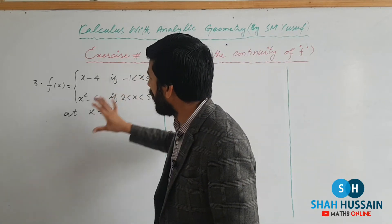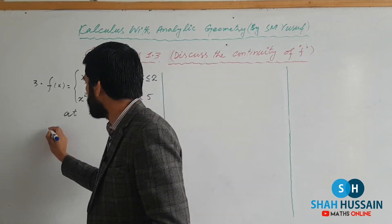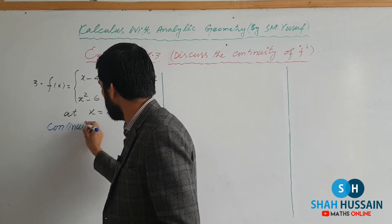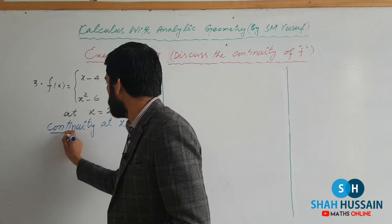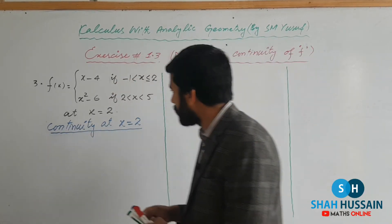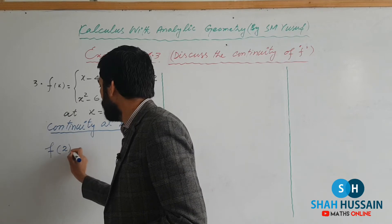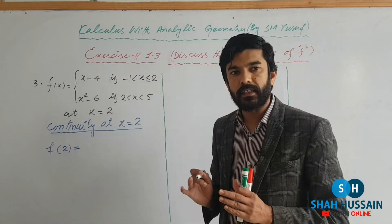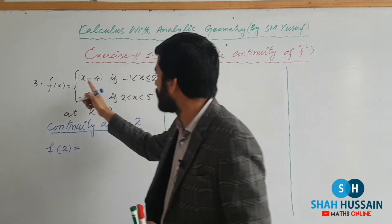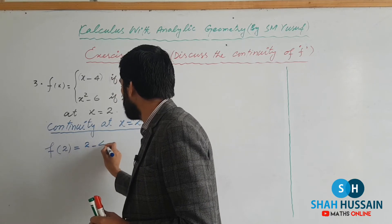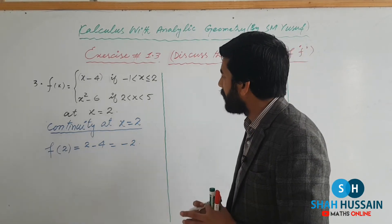Next, Question Number 3. Dear students, we again have a piecewise function and we need to discuss continuity. We will check continuity at x = 2. First, the function value: fitting x = 2 into the piecewise function — since x ≤ 2 applies, we use the first portion: f(2) = 2 - 4 = -2.